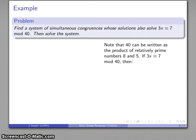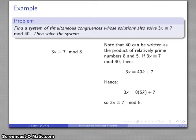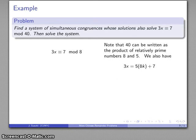So I have 3x ≡ 7 mod 40. That says 3x is 40 times something plus 7. Rearranging, 3x is 8 times something plus 7, so 3x ≡ 7 mod 8. Likewise, because 3x is 5 times 8 plus k, 3x ≡ 7 mod 5.